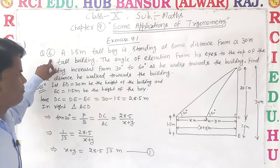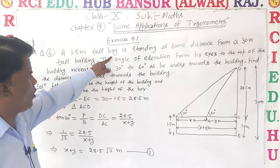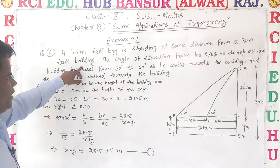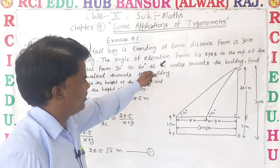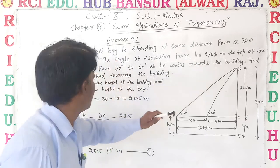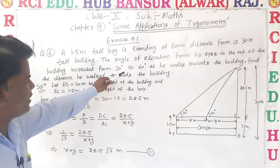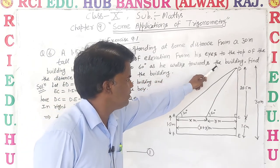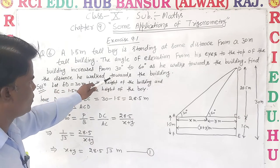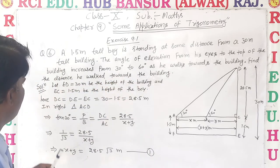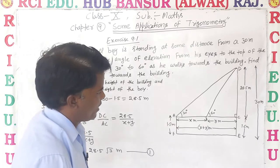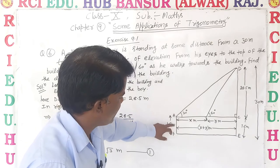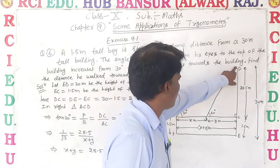After that, Question number 6. A 1.5 meter tall boy is standing at some distance from a 30 meter tall building. The angle of elevation from his eyes to the top of the building increases from 30 degrees to 60 degrees as he walks toward the building. Find the distance he walks toward the building. Let's look at the solution. First, we draw a diagram.